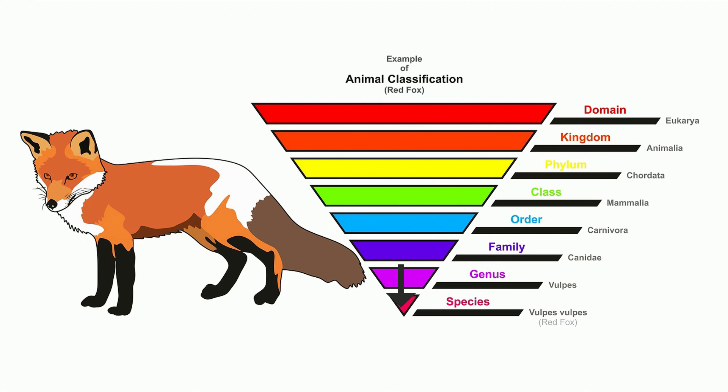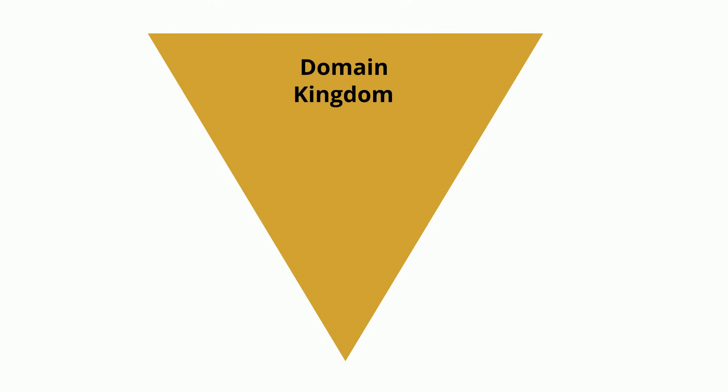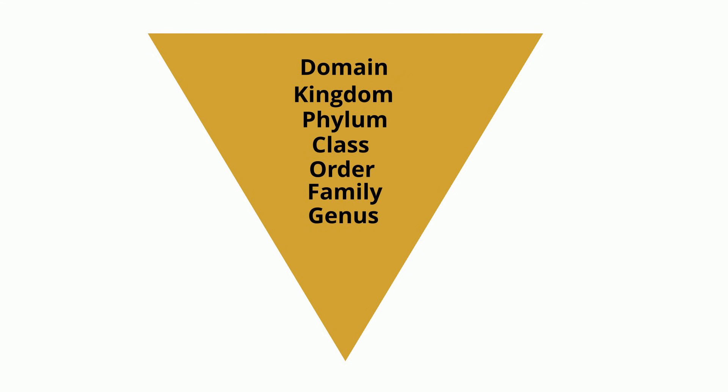The eight levels of classification are domain, kingdom, phylum, class, order, family, genus, and species.